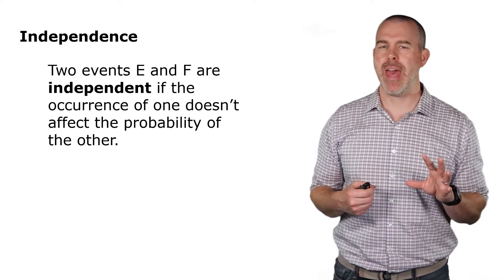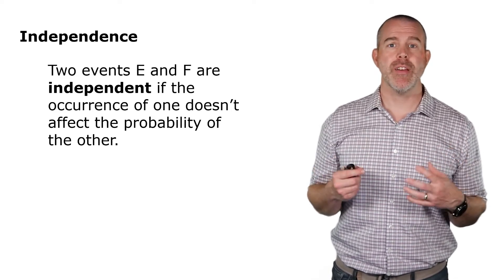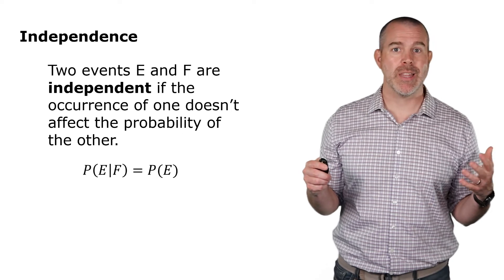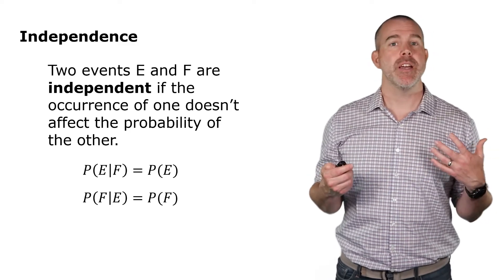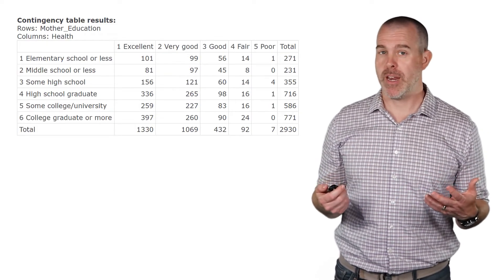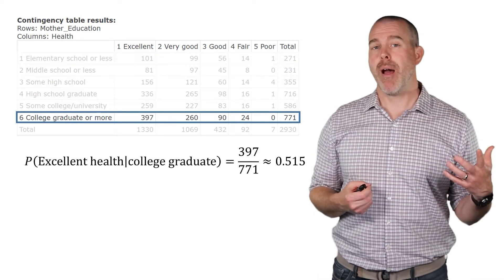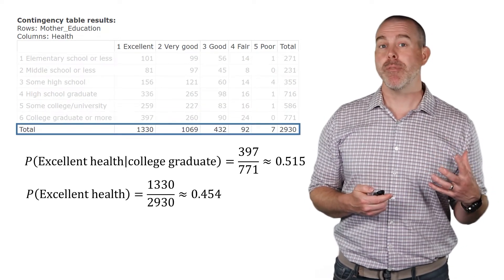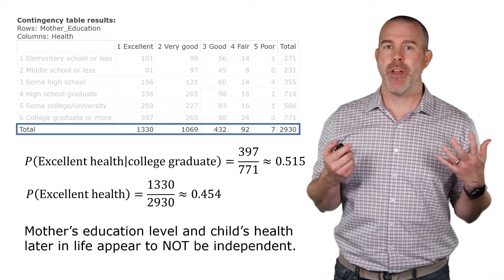The next topic is independence. In a probability context, two events are independent if the occurrence of one event doesn't affect the probability of the other. With probability notation, that means P(E|F) equals P(E), or vice versa, P(F|E) equals P(F). Let's check with our children of immigrants database. The probability of excellent health given that the mother was a college graduate is about 0.515. The probability of excellent health overall is about 0.454. Those are close but different.